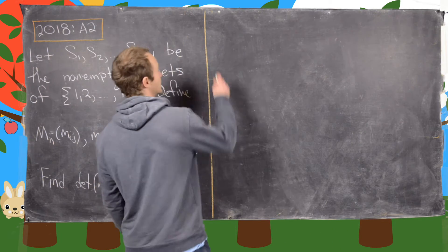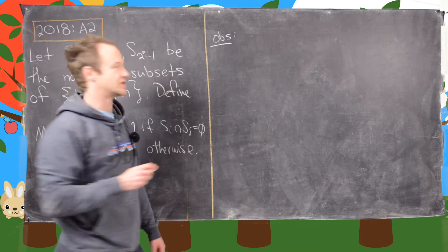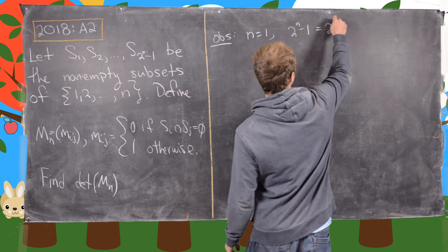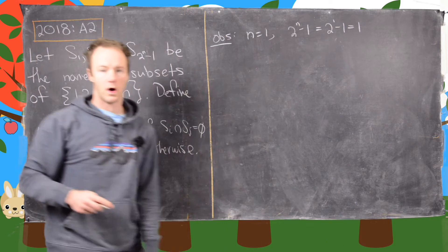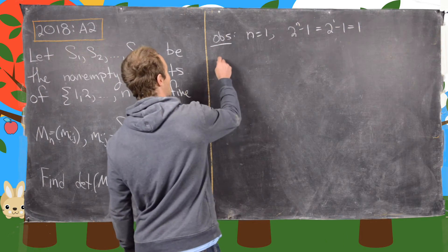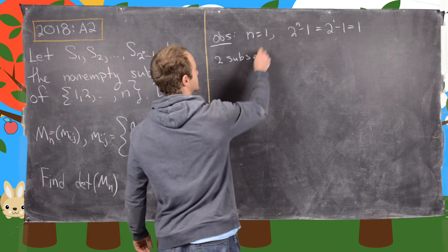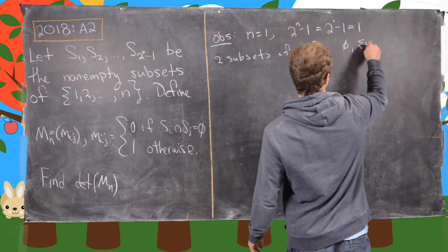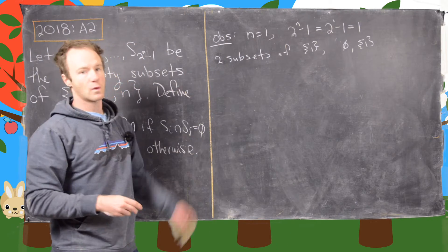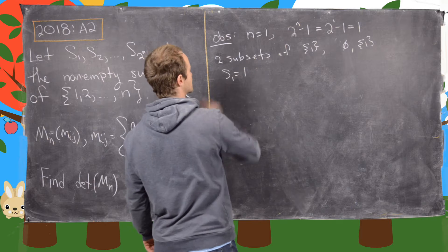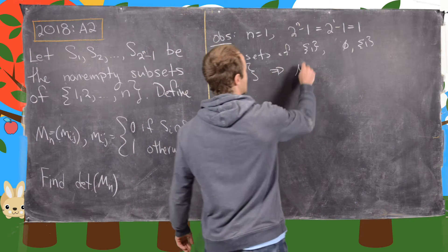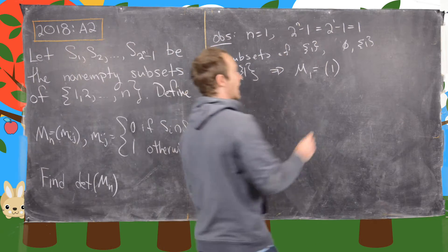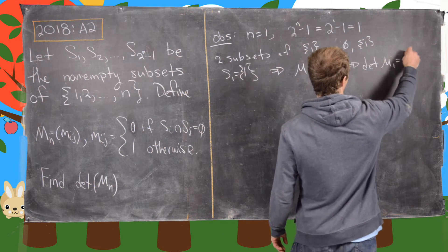The first observation: if N equals 1, then 2^N minus 1 equals 1. There are exactly two subsets of {1} — the empty set and {1} itself. Since we don't want the empty set, S1 equals {1}, which tells us M1 is the 1×1 matrix given by just the number 1. This gives us det(M1) equals 1.